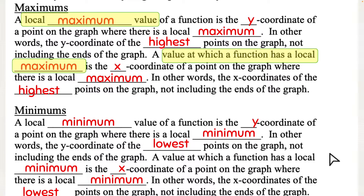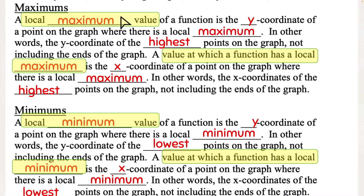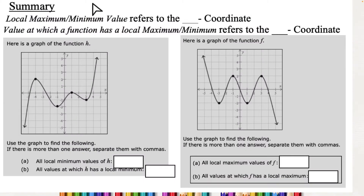So to highlight the key distinction: 'local maximum value' or 'local minimum value' has to do with the y-coordinate. 'A value at which' a function has a local maximum or minimum has to do with the x-coordinate. Local maximum or minimum refers to the y-coordinate; value at which a function has a local maximum or minimum refers to the x-coordinate.